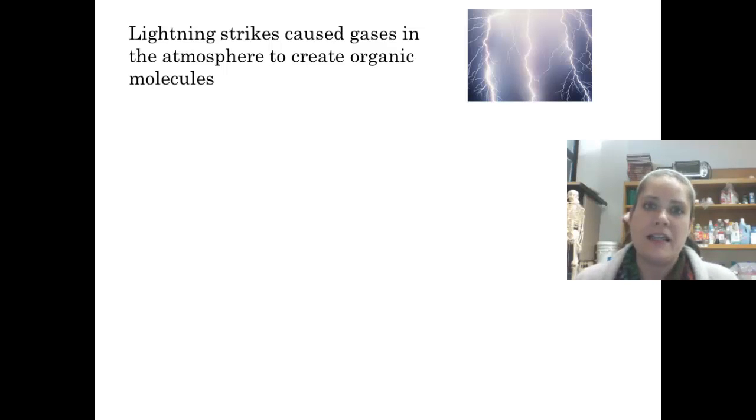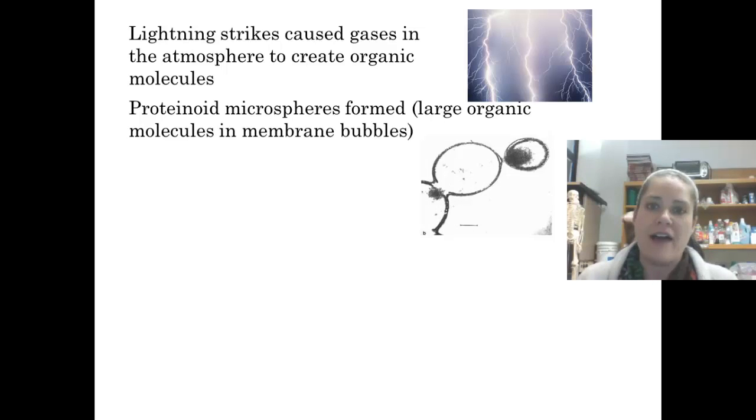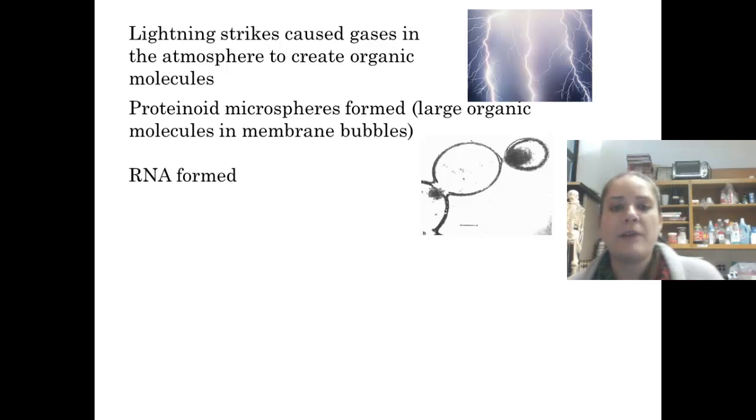This has actually been replicated in the lab. There are scientists who've done this. They've taken the elements that we know were in Earth's early atmosphere, they've shot electricity in, and they've created organic molecules. So what we got were these things called proteinoid microspheres. So proteinoid, protein means protein. Oid means ish. Oid is the science word for ish. So proteinoid means protein-ish, so kind of like proteins. Microspheres, micro means small. Sphere, we know, means one of these. So proteinoid microspheres, so protein-ish little spheres formed. So what they were were just really big organic molecules that were inside these membrane bubbles.